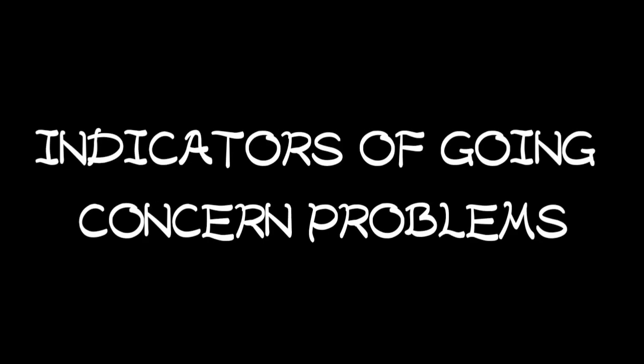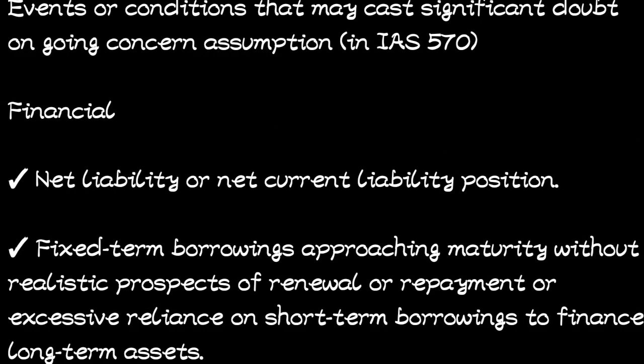Let's look at the indicators of going-concern problems — what are the things that show that an entity may have problems continuing its operations in the future. These are events or conditions that may cast significant doubt on the going-concern assumption in accordance with IAS 570. They are divided into three: financial, operational, and others.